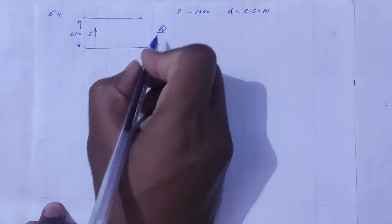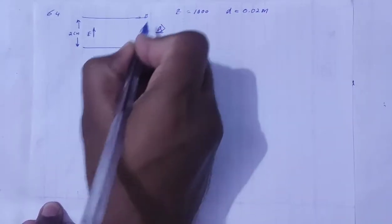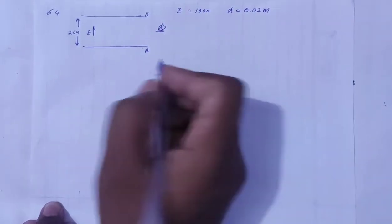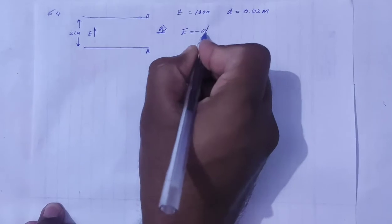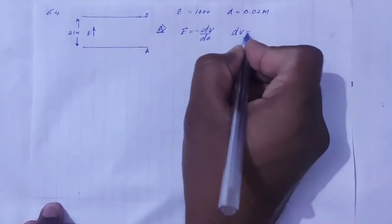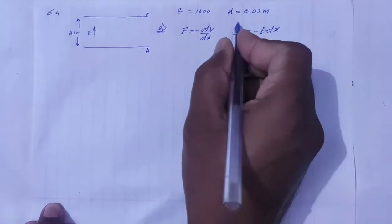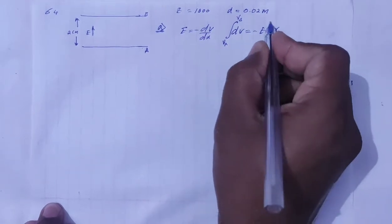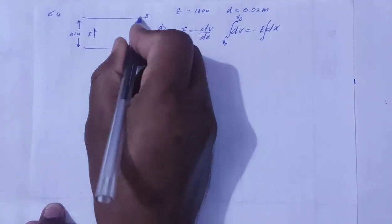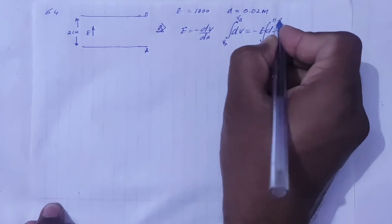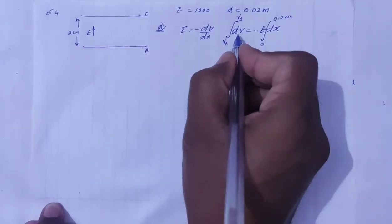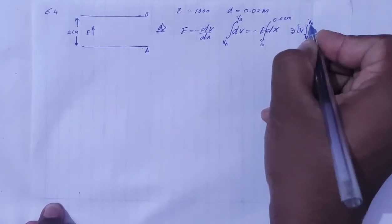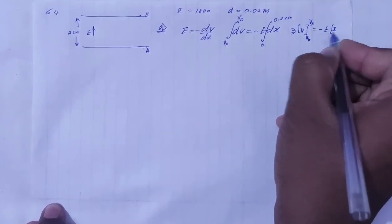First question is to find potential difference. If we label the lower plate as A and upper plate as B, we need to find the potential difference from A to B. The formula is E equals minus dV by dx. Applying this: dV equals minus E dx. Integrating both sides with limits V_A to V_B on the left, and 0 to 0.02 meters on the right.